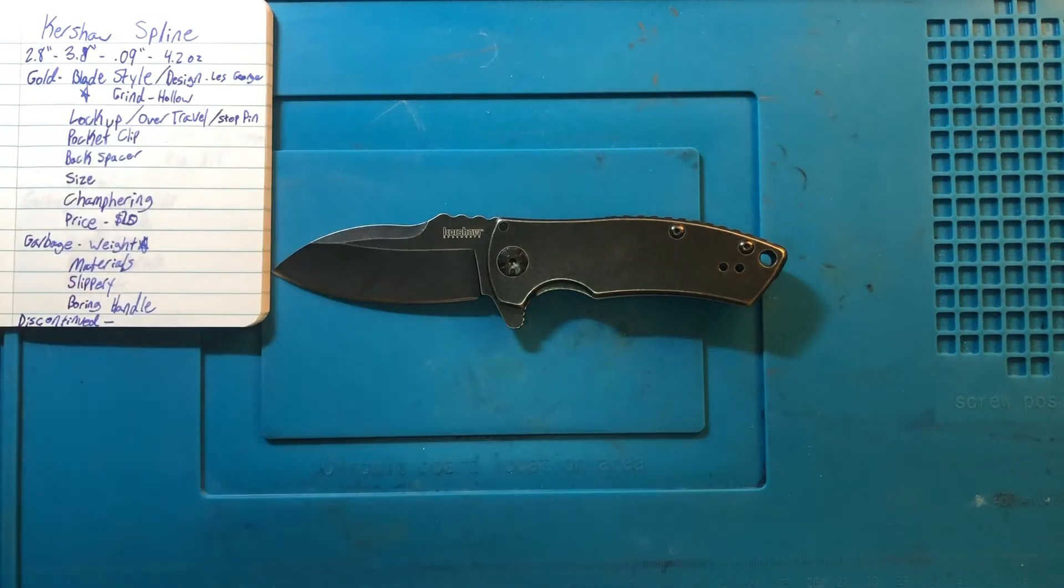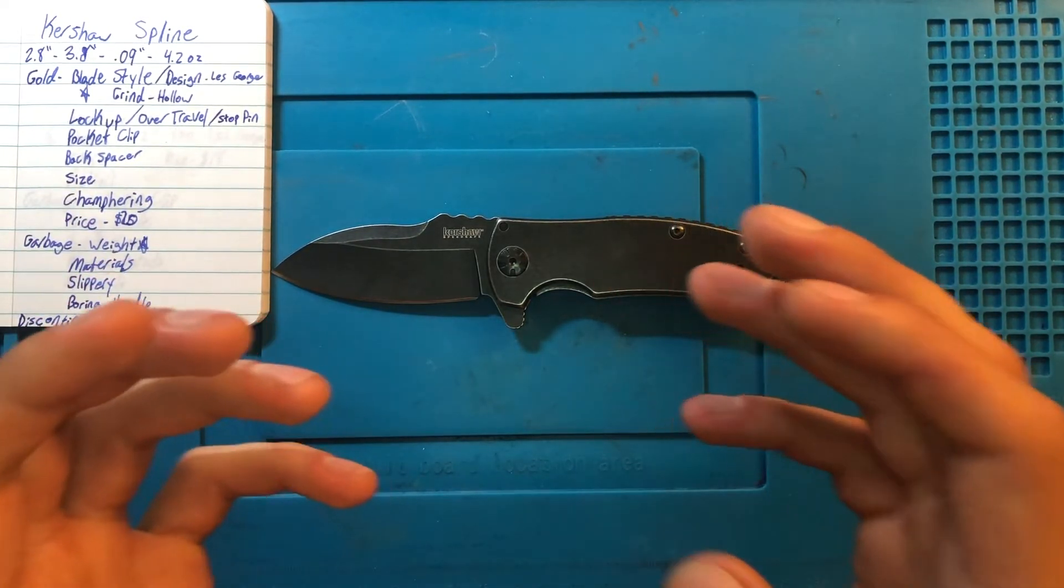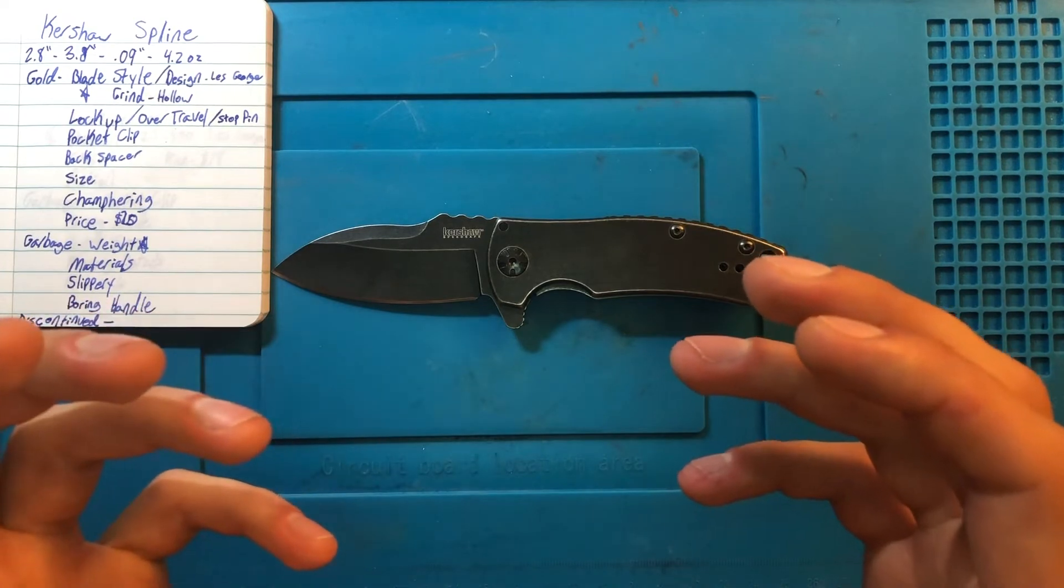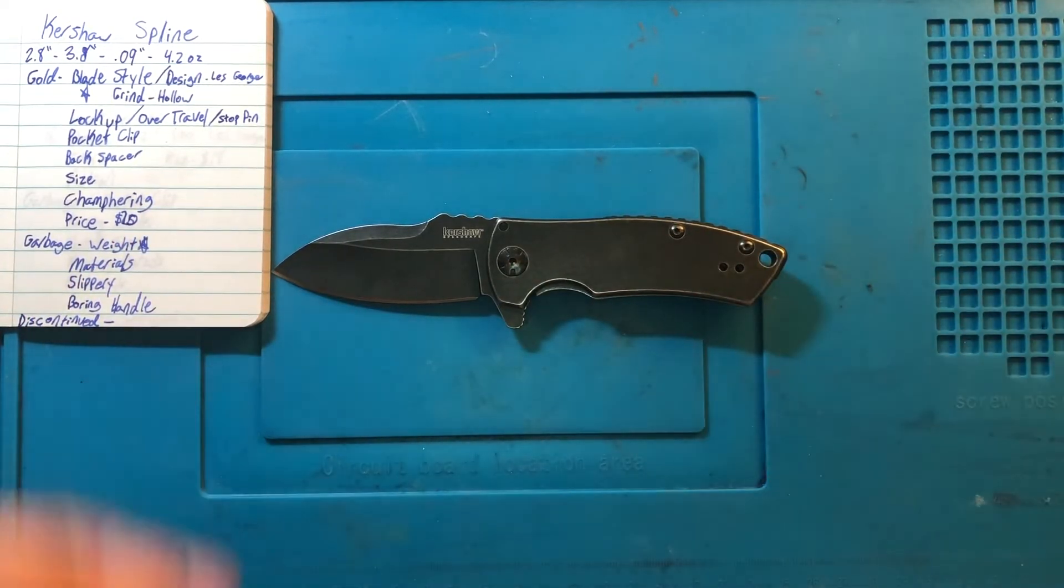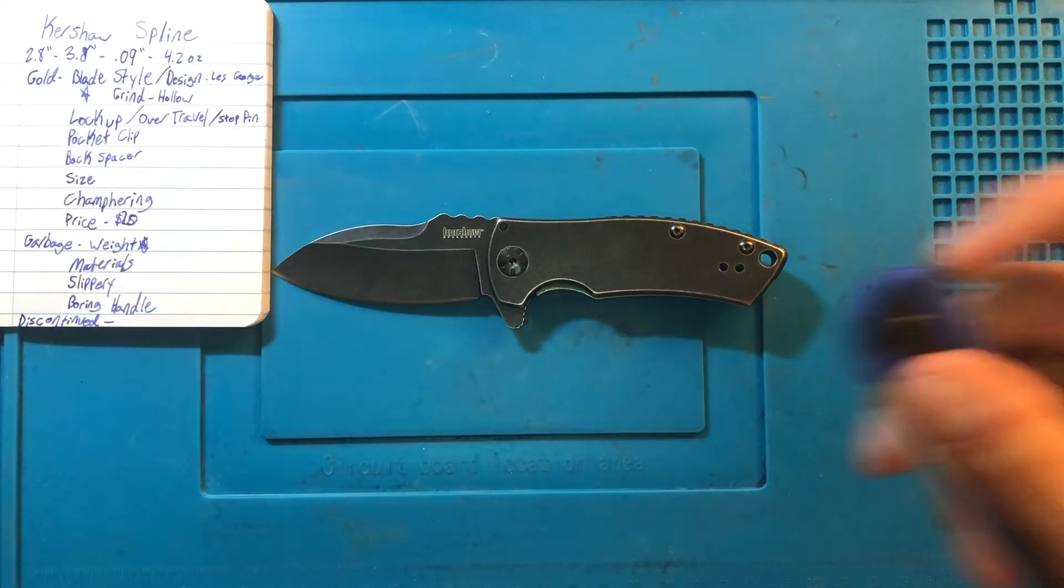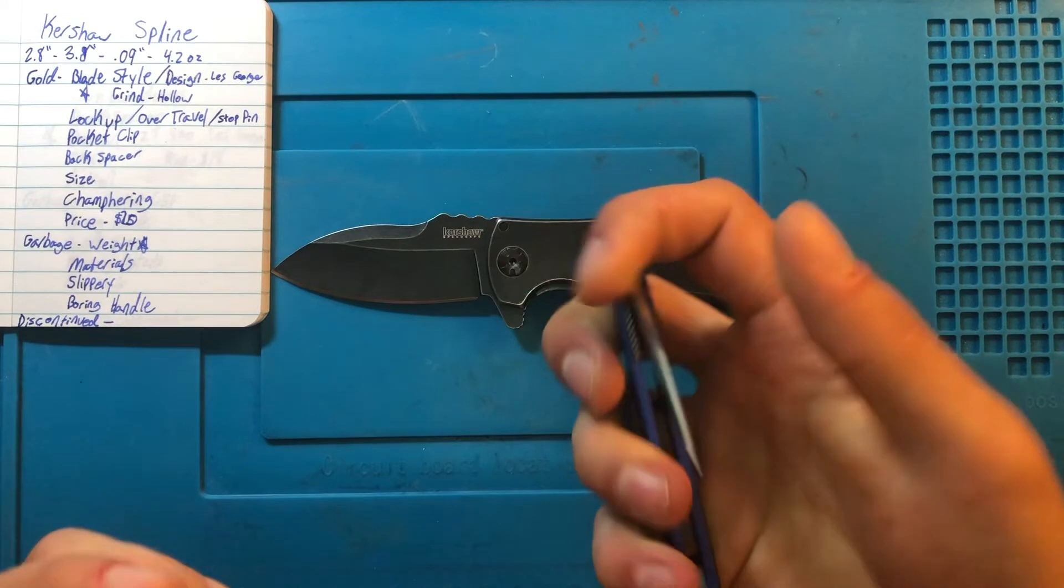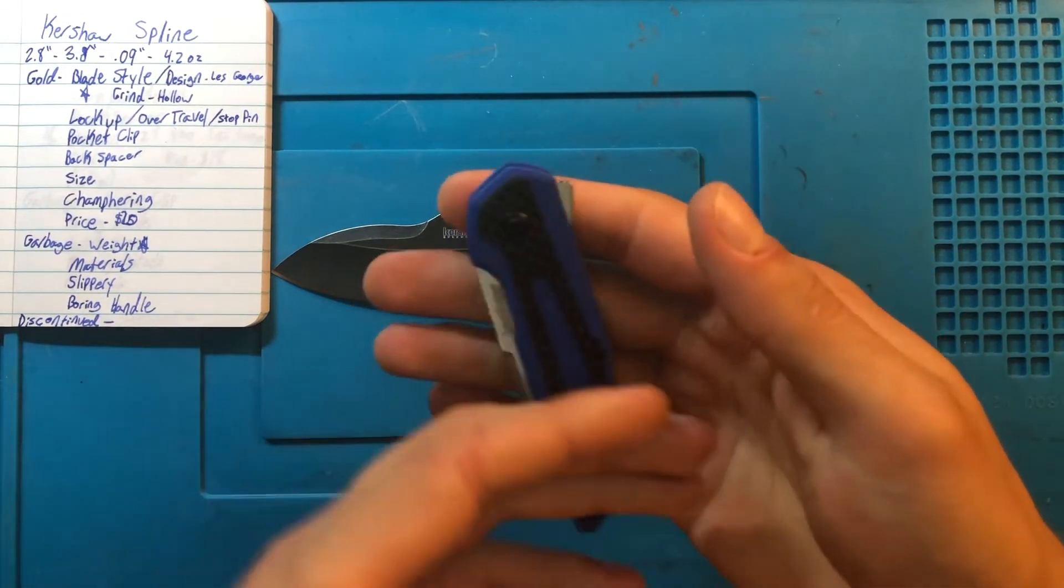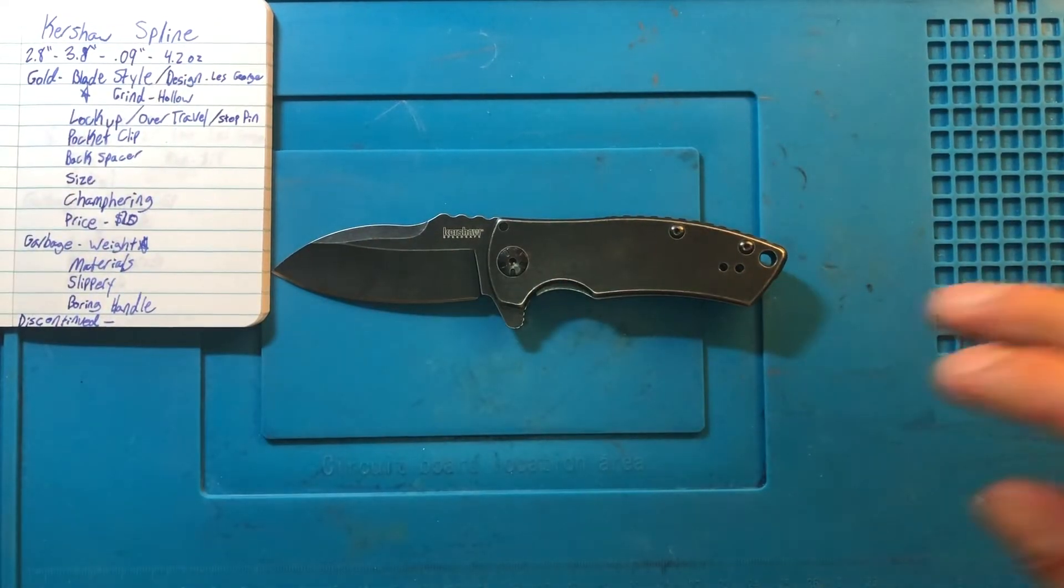Kershaw introduces and retires what feels like an army's worth of blackwash, assisted opening, small knives, you know, every other year. They're starting to do it less now that they are more comfortable with manual operated knives. There's this is fraction, there's concierge, there's blah, blah, blah. But, I mean, that was a couple of years ago, but even this past year, they introduced a couple of more that just spleen's own family.